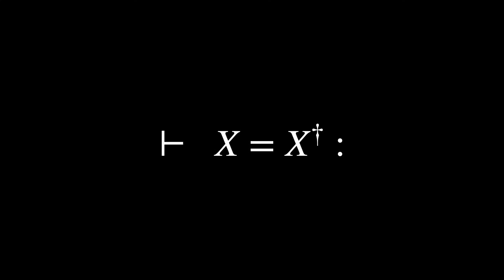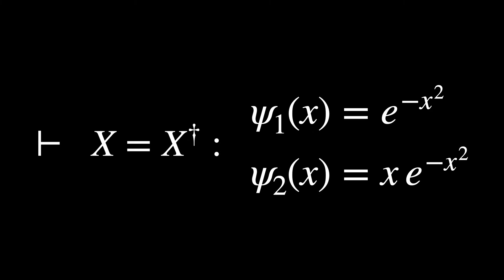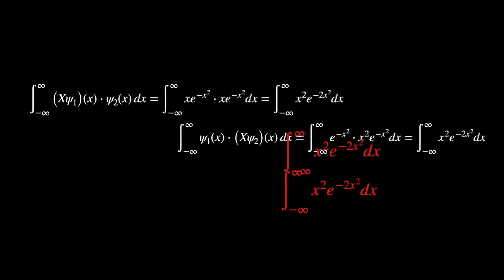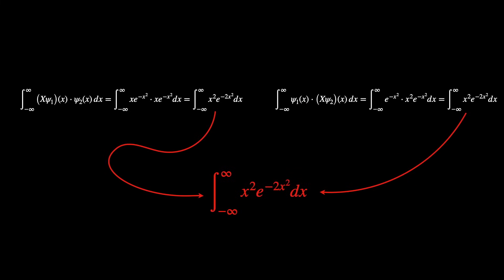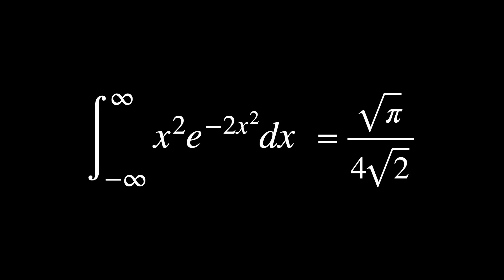Let's check the first condition that the operator is the same as its Hermitian adjoint. Our test functions are psi1 and psi2. Computing the left-hand side, we get this integral. And computing the right-hand side, we get the same integral. So both integrals are clearly the same. And the result for both, by the way, is the square root of pi over 4 times the square root of 2. If you want to see how this integral was calculated analytically, check out the PDF link in the description.